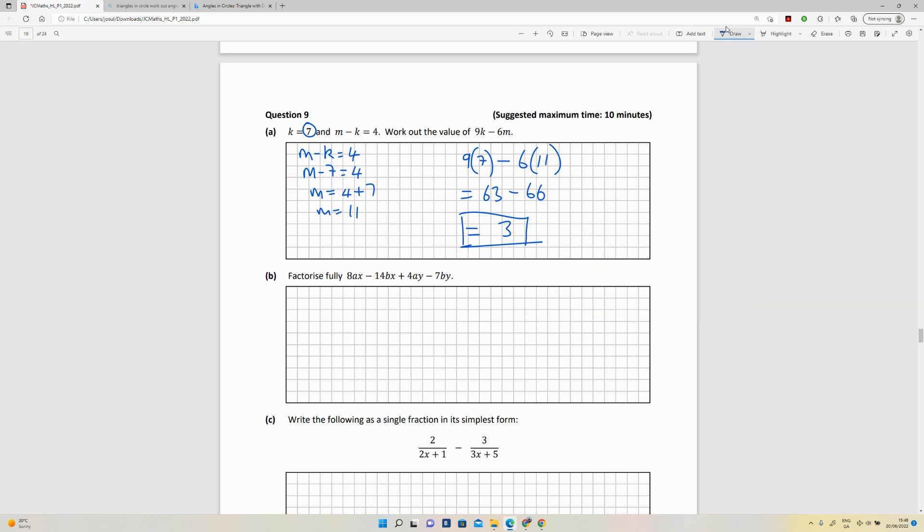Part b: factorize fully the following equation. Okay, so let's look for some factors here. So ax ay, so I've got an a there that I could use. So I could divide two into both of those, I could divide four into both of those.